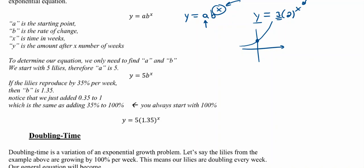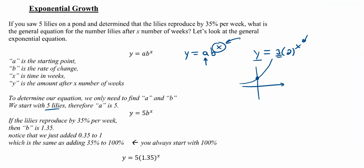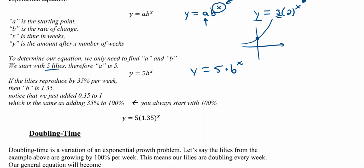To figure out this equation, we start by finding our a and b values. If we start with five lilies, our a value is 5. So y equals 5 times b to the x. Now for the b value — that's the trickier part. What if I made my b value 1? Then 1 to the power of anything is just 1, which just keeps us at where we started.